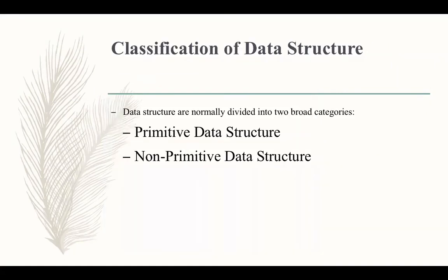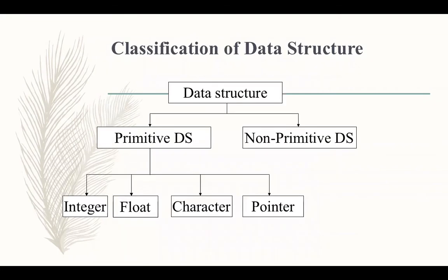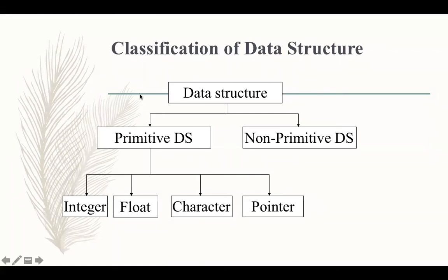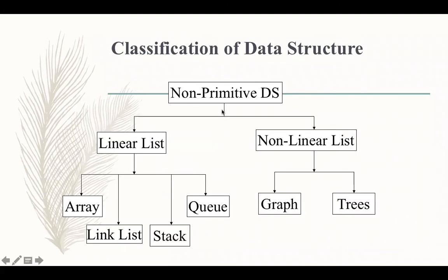Data structures can be classified into primitive and non-primitive. Primitive data structures are already defined in the compiler — in C and C++ you have integer, float, character, double, long, and pointer. You are not defining them; they are defined for you. These are the basic data types representing primitive data structures. We will be more interested in non-primitive data structures, which can be of two types: linear list and non-linear list.